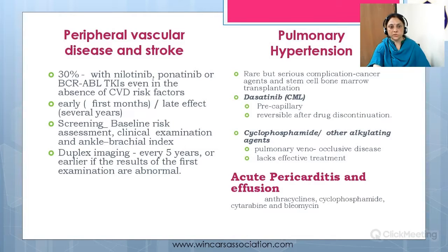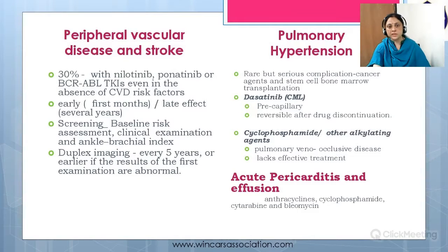Peripheral vascular disease and stroke are seen in 30% of patients even in the absence of cardiovascular disease, especially when treated with nilotinib, ponatinib, or BCR-ABL tyrosine kinase inhibitors. It can be seen as early as the first months or as a late effect several years later. Hence, a baseline risk assessment, clinical examination, and ankle-brachial index should be done in suspected cases. Duplex imaging is recommended every five years, or earlier if the results of the first examination are abnormal.